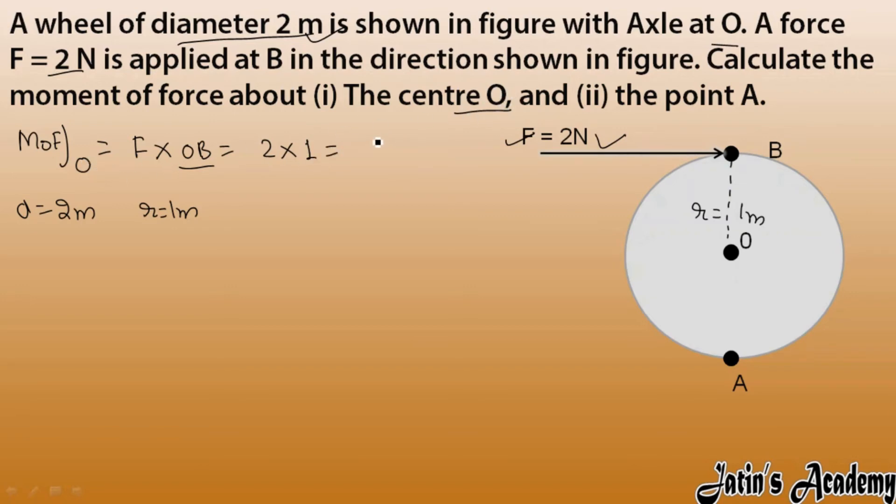After that we have moment of force about point A. Again we have to see force into perpendicular distance. Perpendicular distance in this case, this is force and this is my moment of force about point A. Perpendicular distance is 1 and 1, so simply 2.